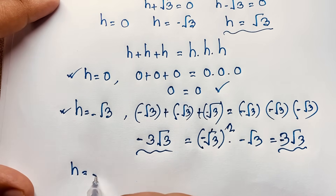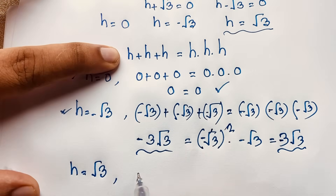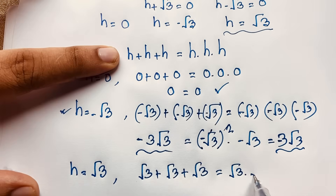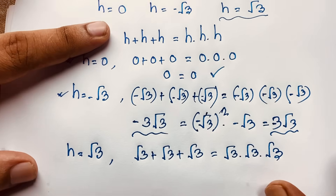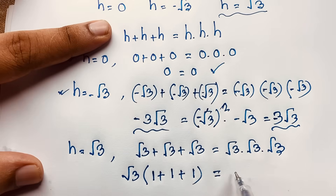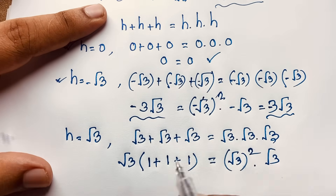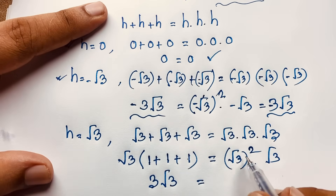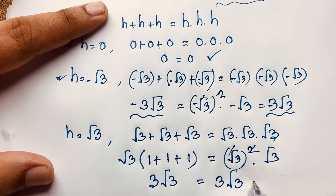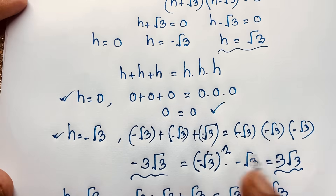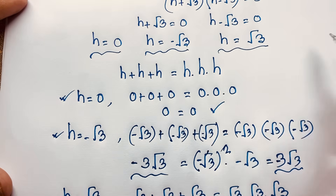For h equals √3: √3 plus √3 plus √3 equals √3 times √3 times √3. Since √3 is common, 1 plus 1 plus 1 gives 3, so left side is 3√3. On the right, (√3)² times √3 equals 3√3. Left hand side equals right hand side. Our final solutions are: h equals 0, h equals negative √3, and h equals positive √3.